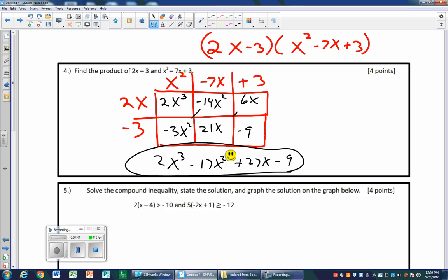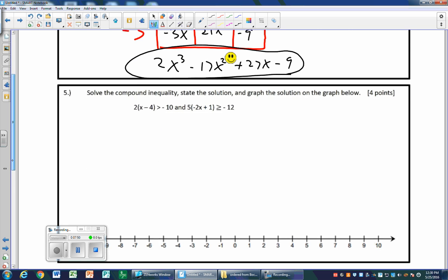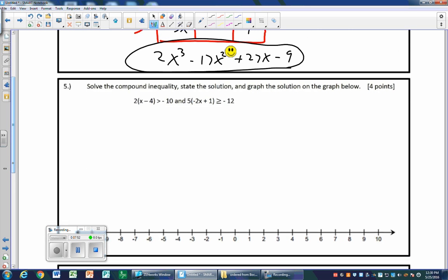It doesn't have it as f of x or as y, so that is the final answer. Number five, solve the compound inequality, state the solution, and graph the solution on the graph below. Four points. Let's focus on that one right now. Let's solve it. There's two ways to go in this direction. I could divide everything by 2, but most of you are going to distribute.